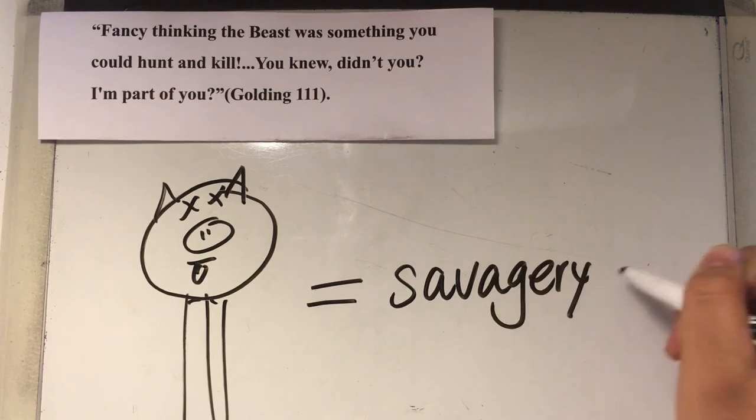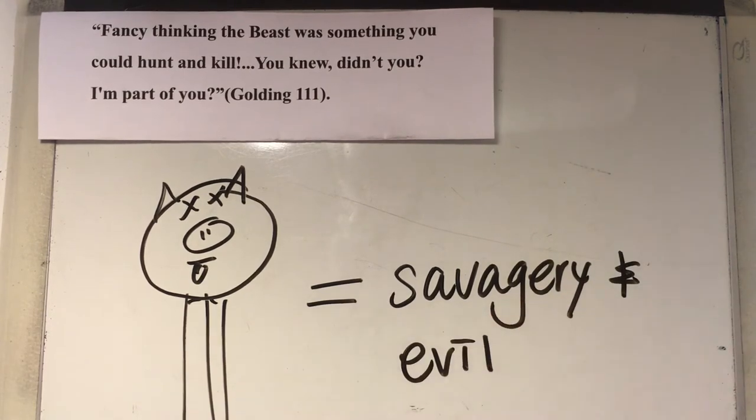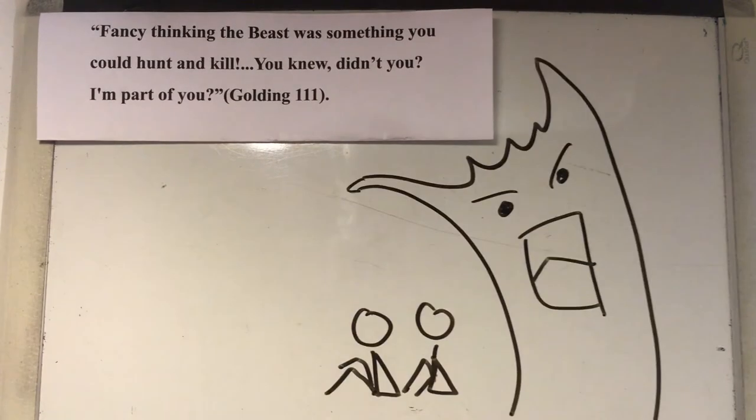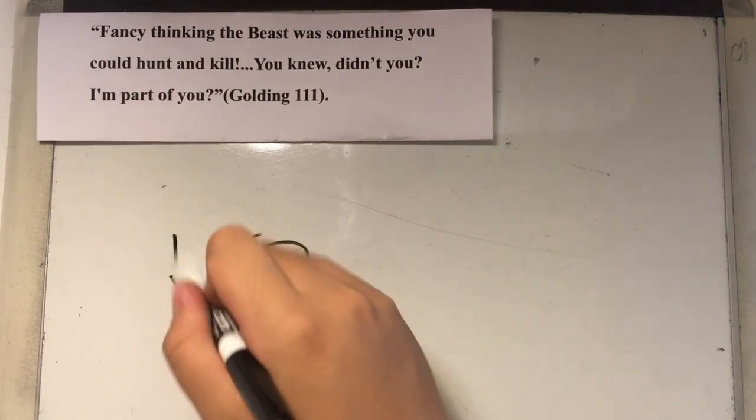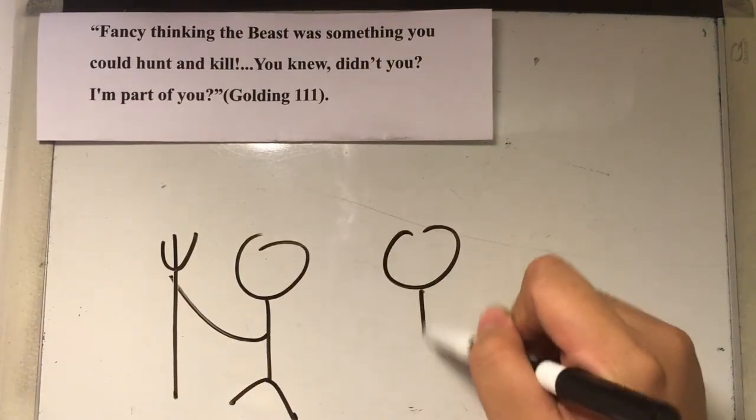On the opposite side of the conch, the beast in the book represents the savagery and evil inside each human being from birth. At the beginning, the boys believed that there was an actual beast on the island. As the plot continues, the older boys became more and more brutal, and their belief in the beast grows.